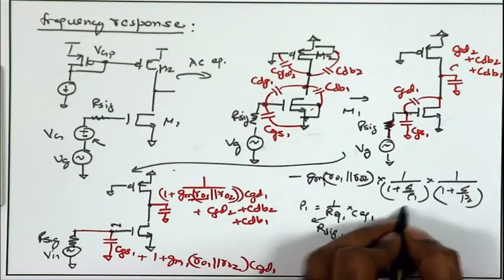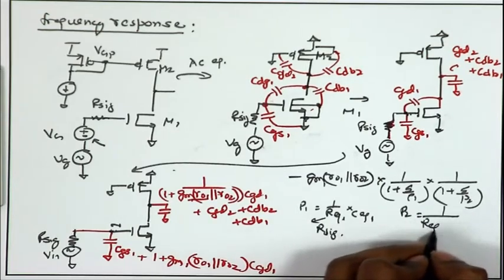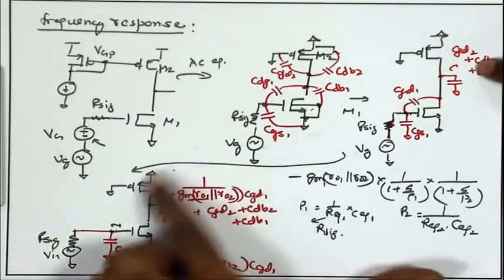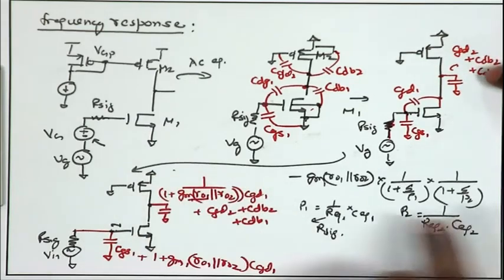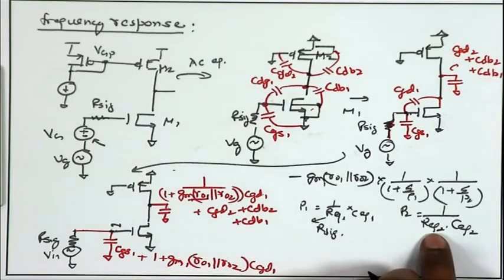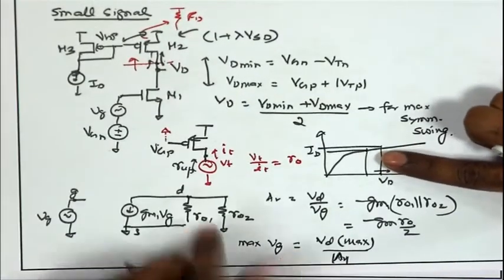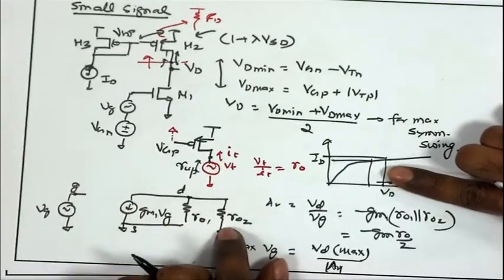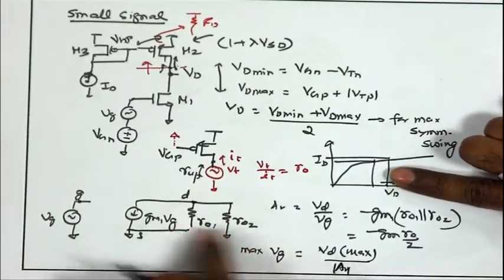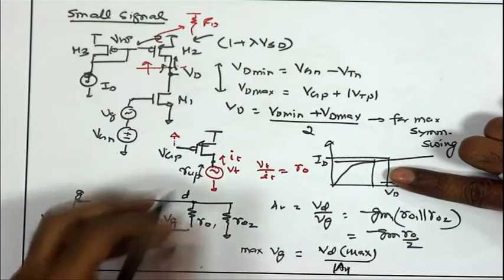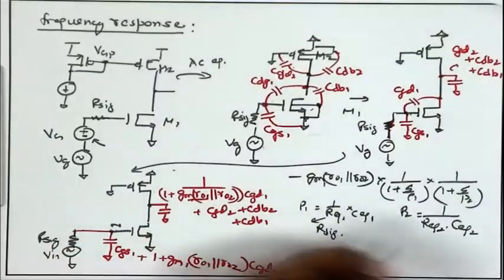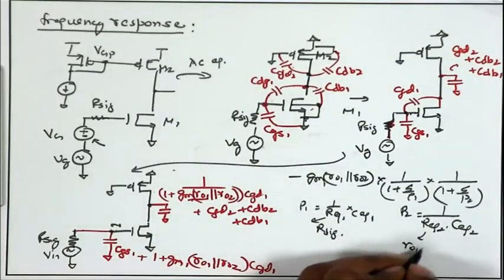For P2, we already found C_eq2. The small-signal resistance R_eq2 between the drain node and AC ground is simply R_O1 ∥ R_O2. So R_eq2 = R_O1 ∥ R_O2. This gives us the values of the two poles.